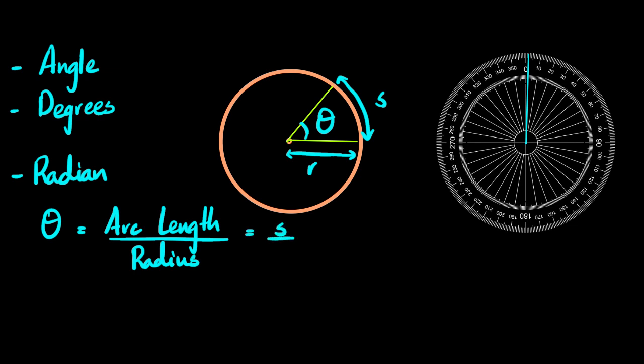In terms of symbol, I would write this as theta equals S upon R, where S is arc length and R is radius. So just like how we could define the degree as the angle equal to the angle of a complete circle divided by 360 degrees, so that small angle each of that is one degree, the definition for the radian is slightly different.